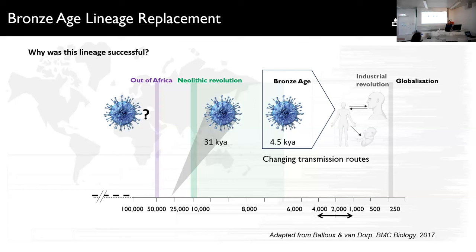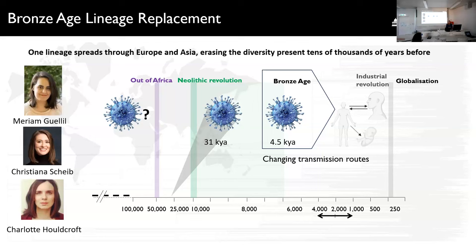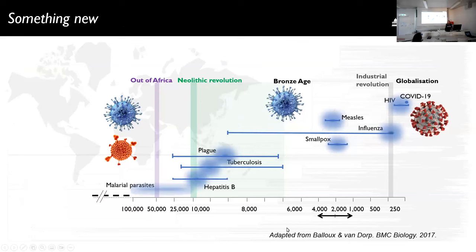This work was led by Christiana Scheibe and Charlotte Hallcroft at the University of Cambridge. It closes the 'something old' part of the talk and leads nicely into 'something new.' I've discussed a prehistoric lineage replacement event in HSV1, and while that might feel far removed, lineage replacement of viruses is something we've all experienced in the last three years — during the emergence of what's probably the most intensively studied virus to date: SARS-CoV-2 and the COVID-19 pandemic.